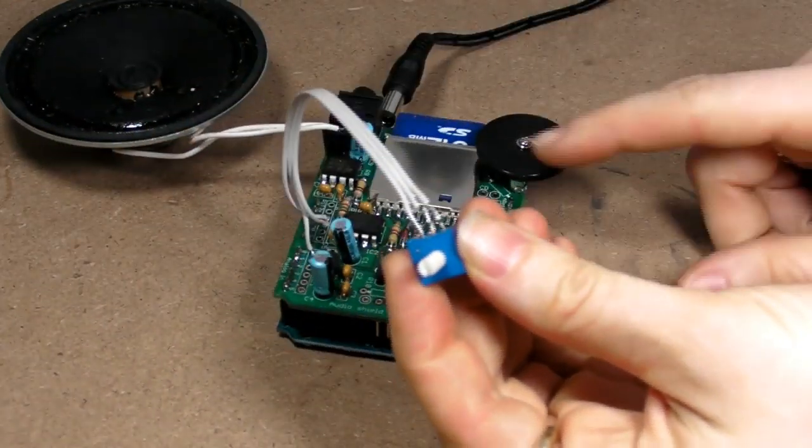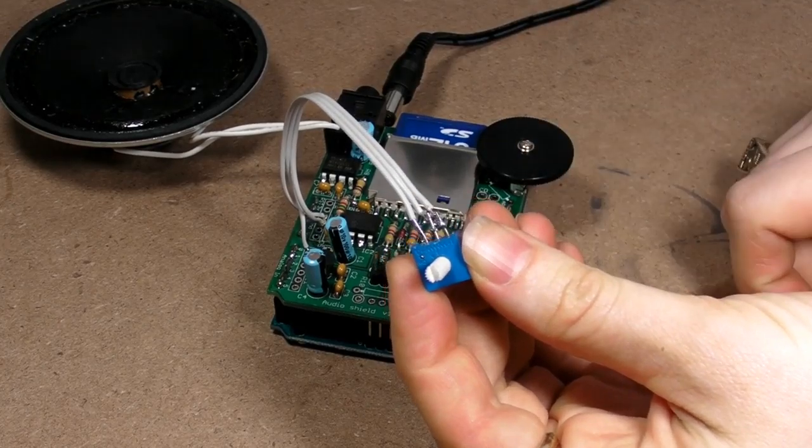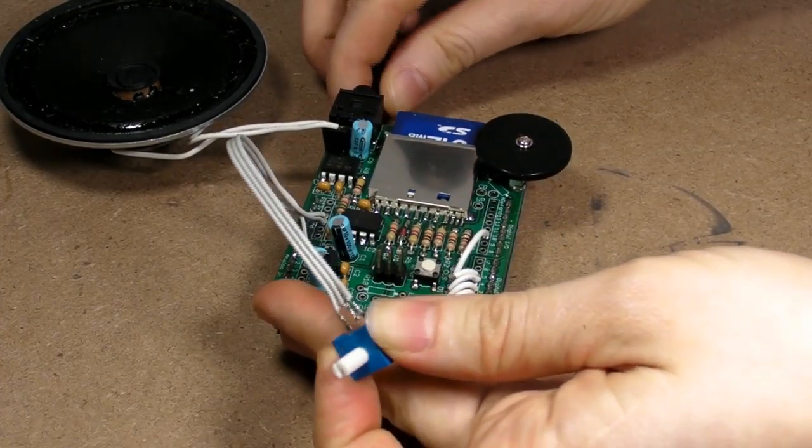Here, a simple potentiometer is connected to the wave shield and controls the speed at which the audio is played, which can be fun if you're a fan of the Chipmunks.